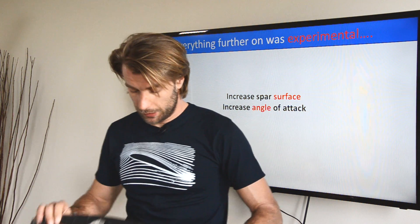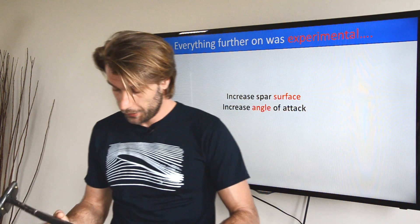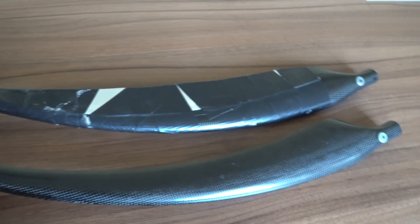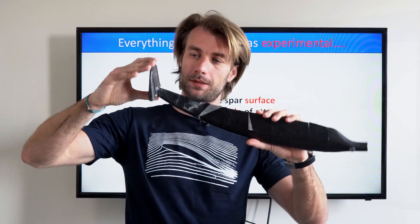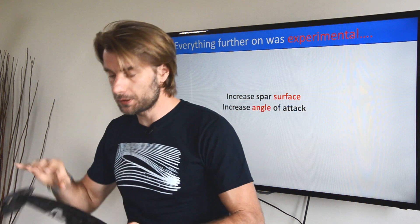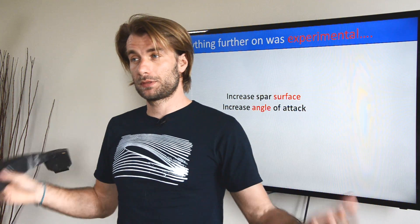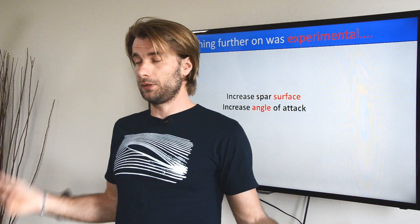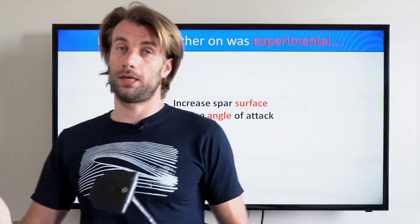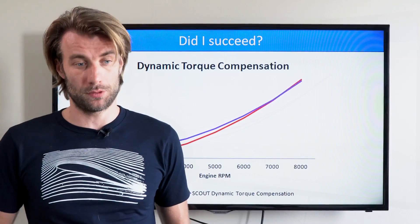The first thing I did was increase the surface of the spar. I added sheets of metal wrapped with duct tape — this is the original that I have flown. Luckily, on the prototype we had a ball joint, which allowed me to change the angle of attack. So step by step, in a very experimental way, I increased the surface, increased the angle of attack, and found the profile, the size, and the angle that I believe worked the best.